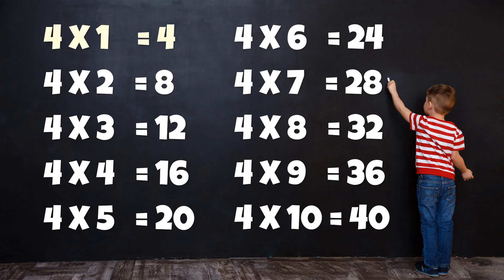Table of 4: 4×1=4, 4×2=8, 4×3=12, 4×4=16, 4×5=20, 4×6=24, 4×7=28, 4×8=32, 4×9=36, 4×10=40.